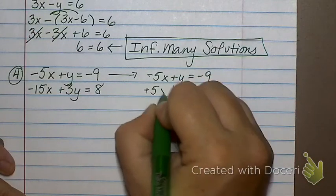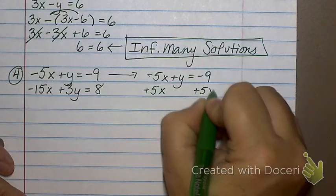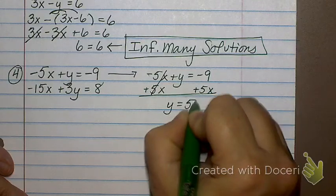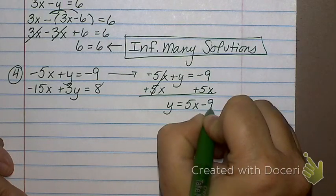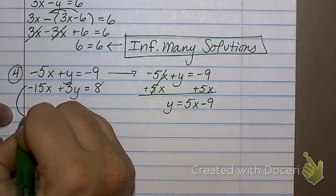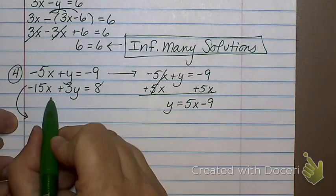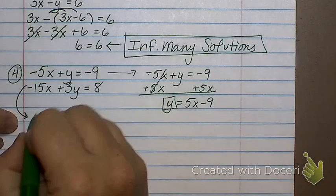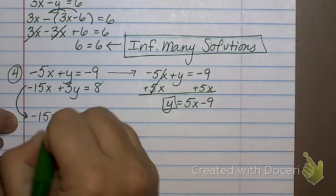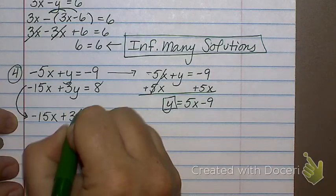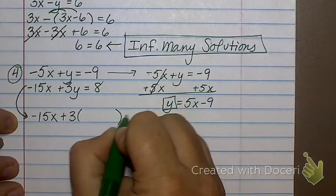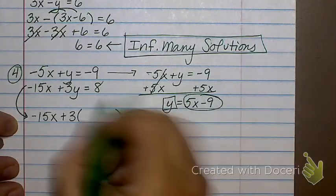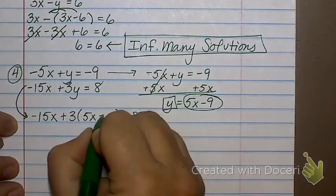So y equals 5x minus 9. Now I take the other equation, and which letter am I taking out of the equation? Y. I'm taking y out. So negative 15x plus 3y equals 8. And I'm going to replace the y with 5x minus 9.